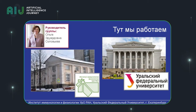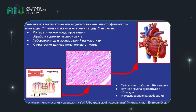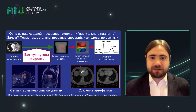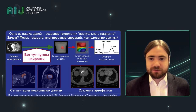Let me first tell you where I work and what I work for. I work for the Ural Federal University and also in the Institute for Neurology and Physiology of the Ural's branch of the Russian Academy of Sciences. The manager of my research group is Olga Solovyov, and we do not do neural networks per se. First and foremost, we do modeling of myocardial processes — researching the electrical processes in myocardium, which is the muscle tissue of the heart.